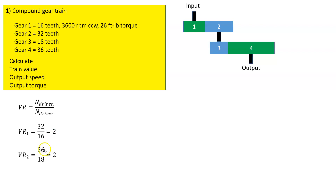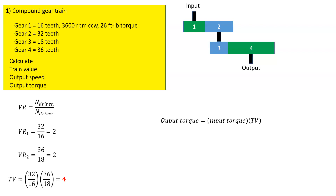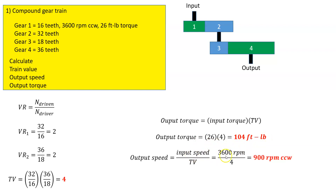For the second set, the driven gear is 36 teeth (gear number four) and the driver gear is 18 teeth (gear number three), so we've got a velocity ratio of two, and the train value is the product of that, which is four. So we've got a velocity ratio of two for the first, two for the second, and a total train value of four. The output speed is 3600 divided by four, which comes out to 900 RPM. The output torque is 26 times four equals 104 foot-pounds. In this case, it's going counterclockwise.